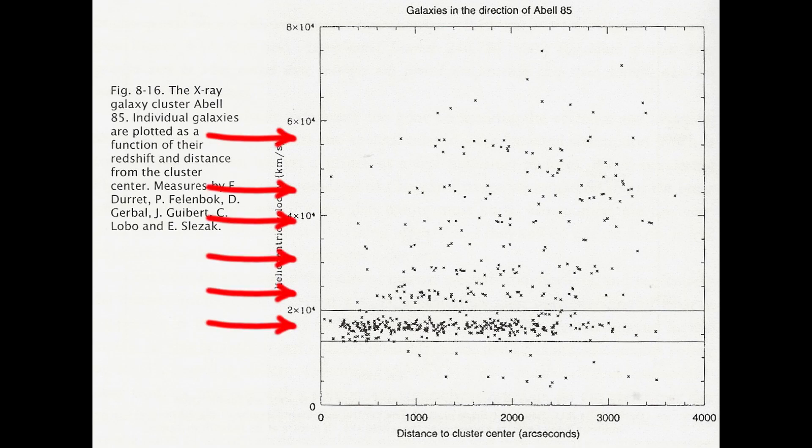Now this is normally attributed to a large scale structure in this direction. If however we look at this diagram it clearly shows that the group of galaxies at higher redshifts are concentrated more to the center of the cluster than the background galaxies.